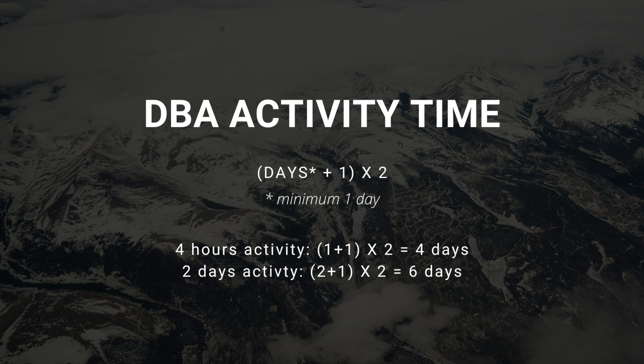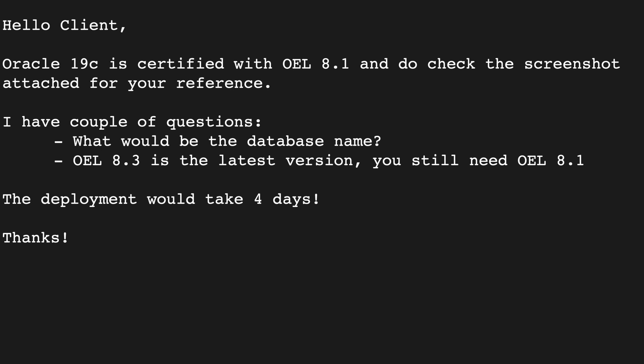You have to communicate this time to your clients because in real time other teams may take more time to provision a server, allocate storage, or set up the network. If you are able to deploy Oracle 19c before the six days are up, don't wait — communicate back to the client saying you over-delivered and here is their database. Finishing early is great, but having that buffer buys you time in case other issues arise. For our Oracle 19c on OEL 8.1 deployment, which technically takes two to three hours, the formula gives us four days, and that's what you mention in the email.